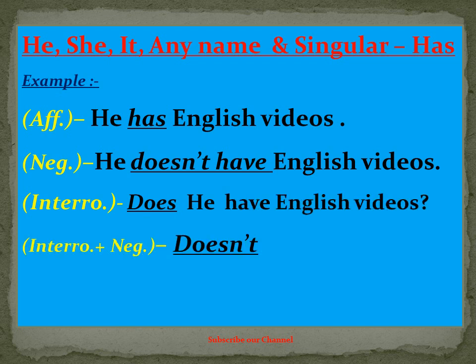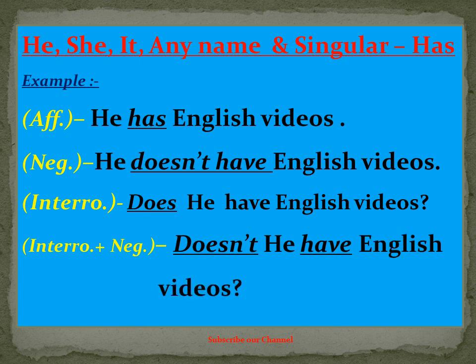एक चीज़ आप यहाँ पर गौर करिएगा कि negative और interrogative plus negative sentences में मैंने 'does' का इस्तिमाल किया है, और does के साथ हमेशा 'have' लगाया है। क्योंकि has और does दोनों third person के साथ इस्तिमाल किये जाते हैं, लेकिन एक समय पर दोनों नहीं आ सकते — इसलिए जहाँ does आया, वहाँ have आ गया।